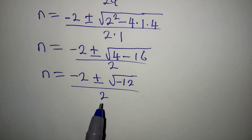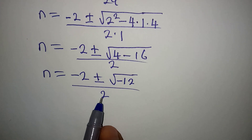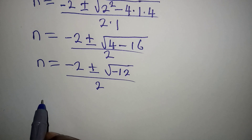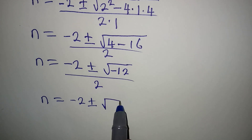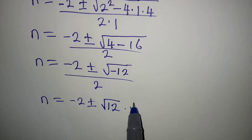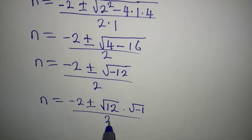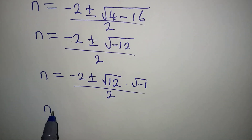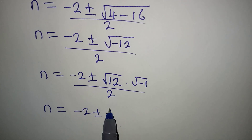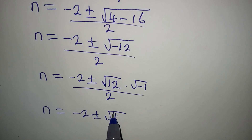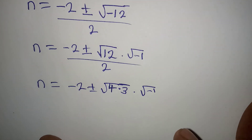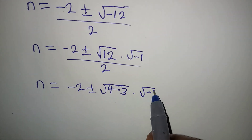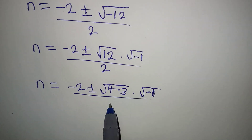We do not cancel out the 2 yet, because it will also work for this. From here, n will be equal to minus 2 plus or minus square root of 12 multiplied by square root of minus 1, all over 2. Now, what is 12? n is minus 2 plus or minus square root of 4 multiplied by 3, then multiplied by square root of negative 1, all over 2.